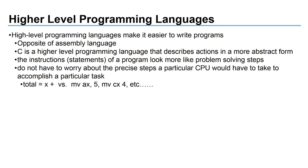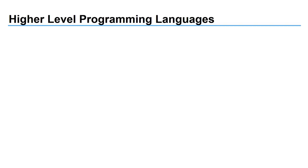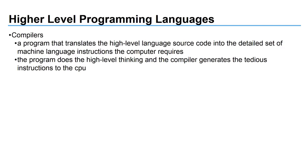We're going to study C as our higher-level programming language, but other examples include Java and Objective-C — these are high-level programming languages that make your life easier and are much more efficient. If you have a language that's more abstract, you need to be able to take that language and run it on a CPU — converting it to instructions the CPU understands. This is where a compiler comes into play. When you write code, you use a compiler that translates high-level language source code into detailed machine language instructions — basically assembly language. The compiler generates all the millions of instructions that go to the CPU's instruction set from your high-level abstract code.